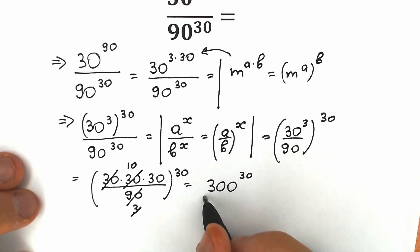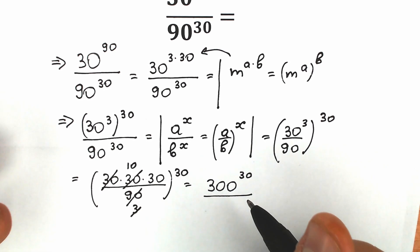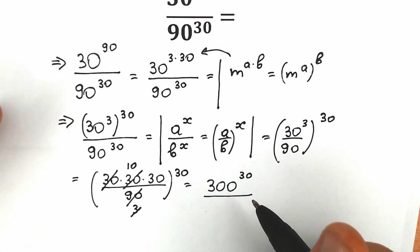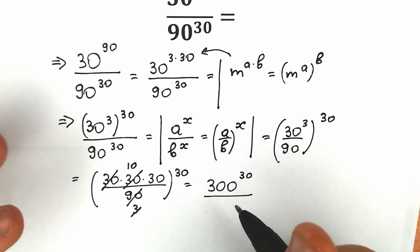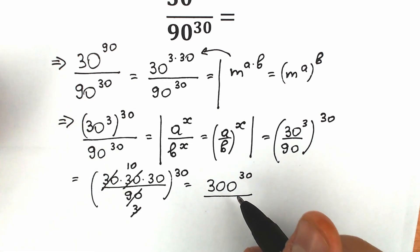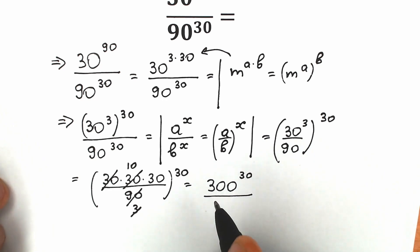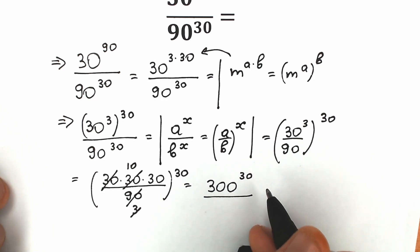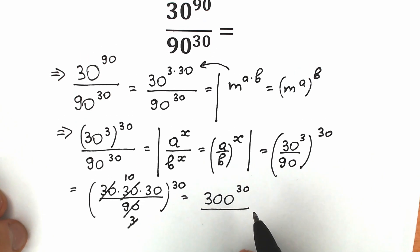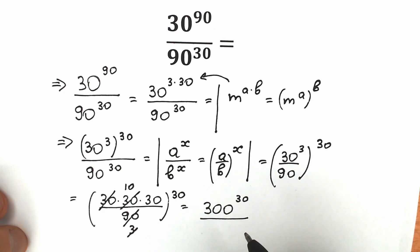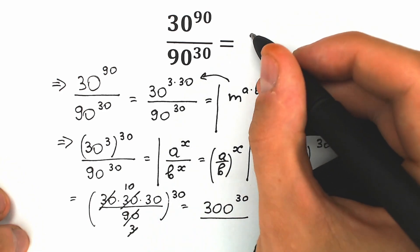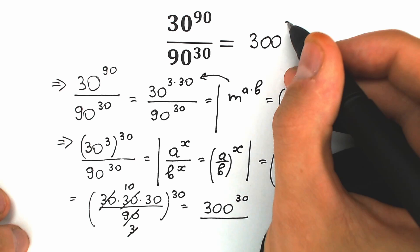And this is enough — we can't simplify this further, so it's not possible to simplify more. One option is to express this as a power of 10, but it's not necessary here because we have a clear base and a clear power. So the final answer is 300 to the power 30.